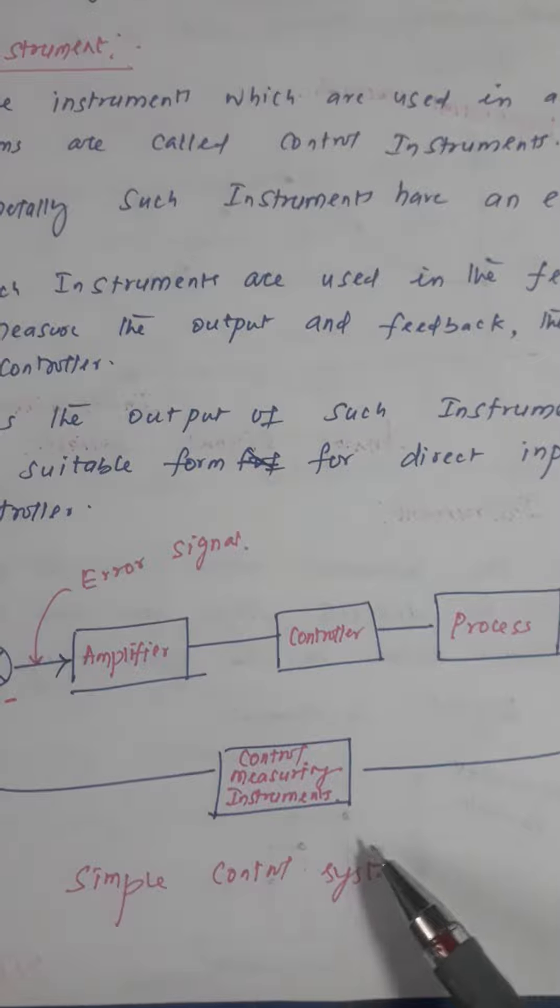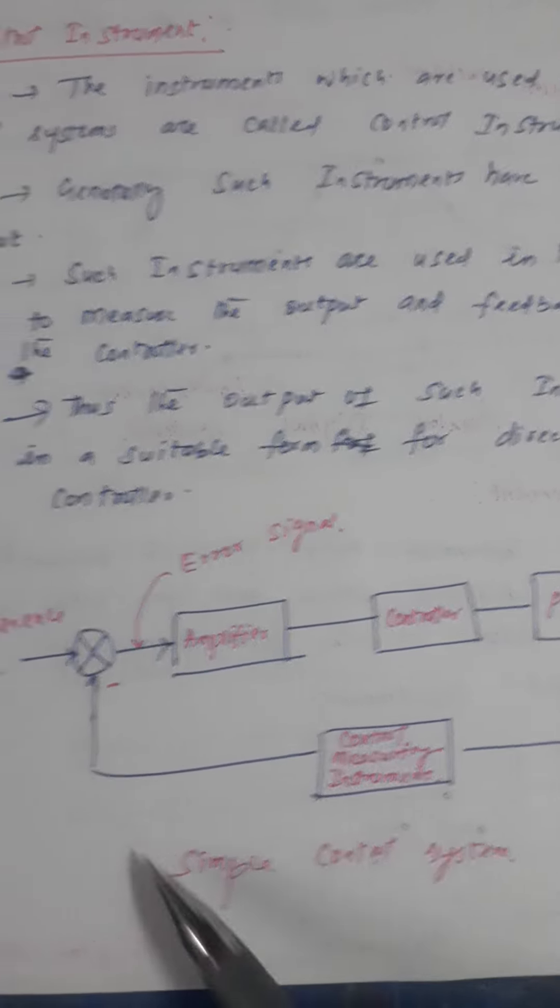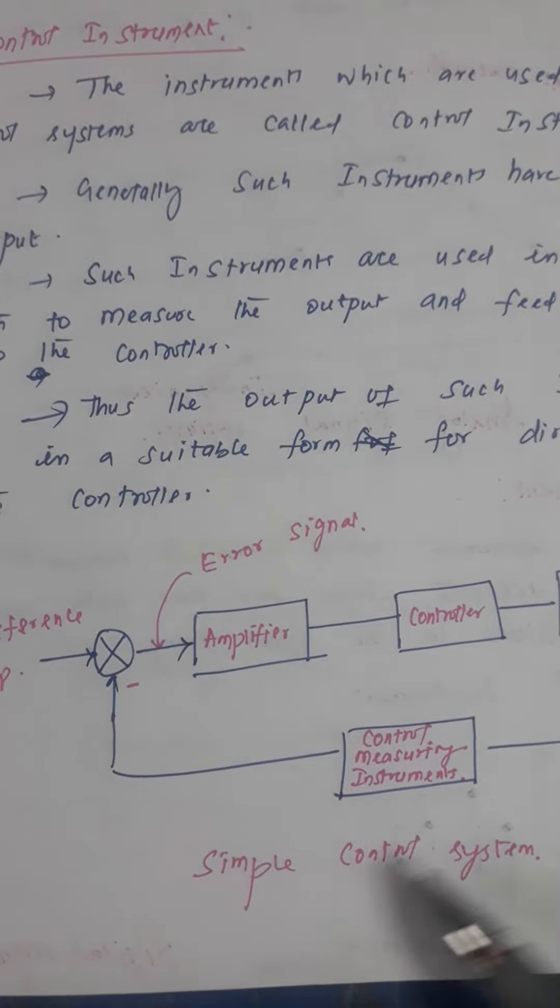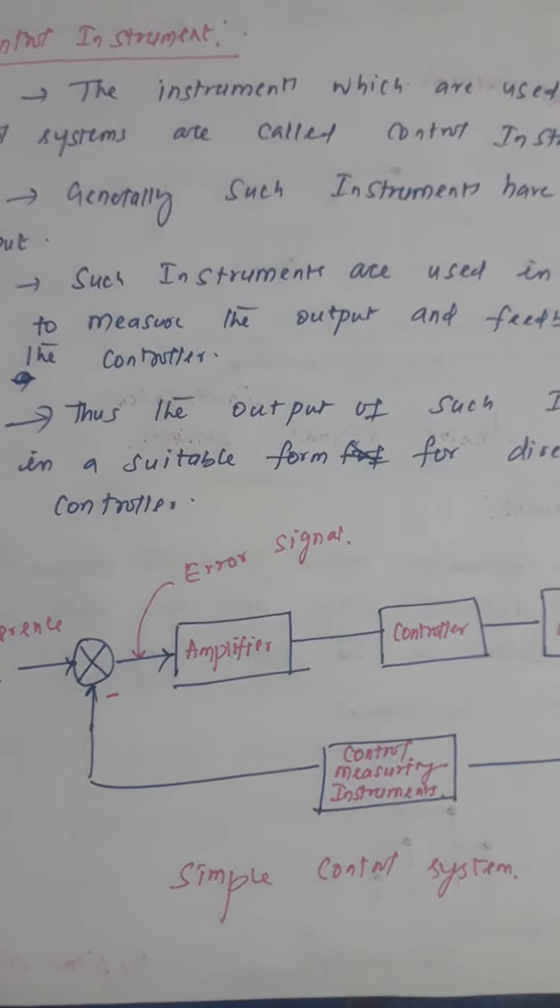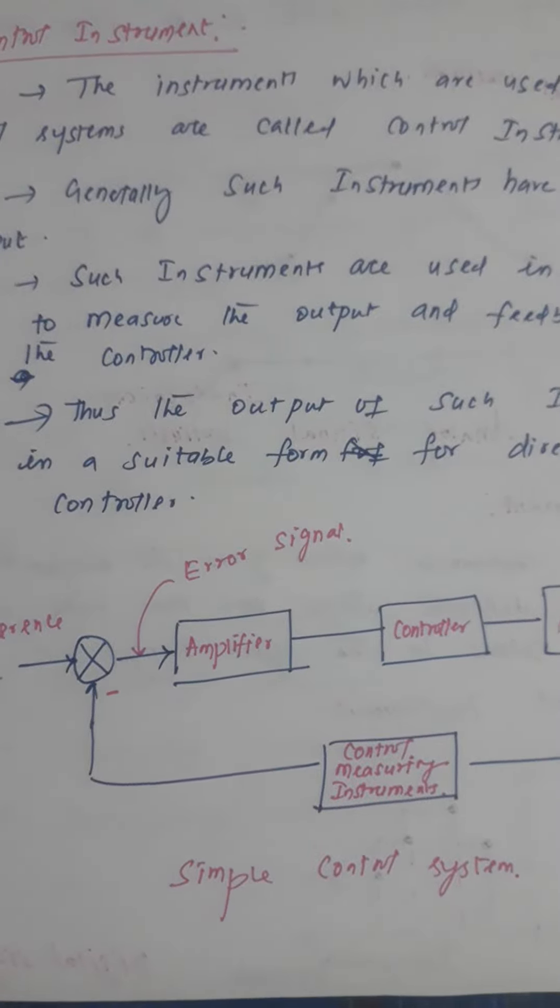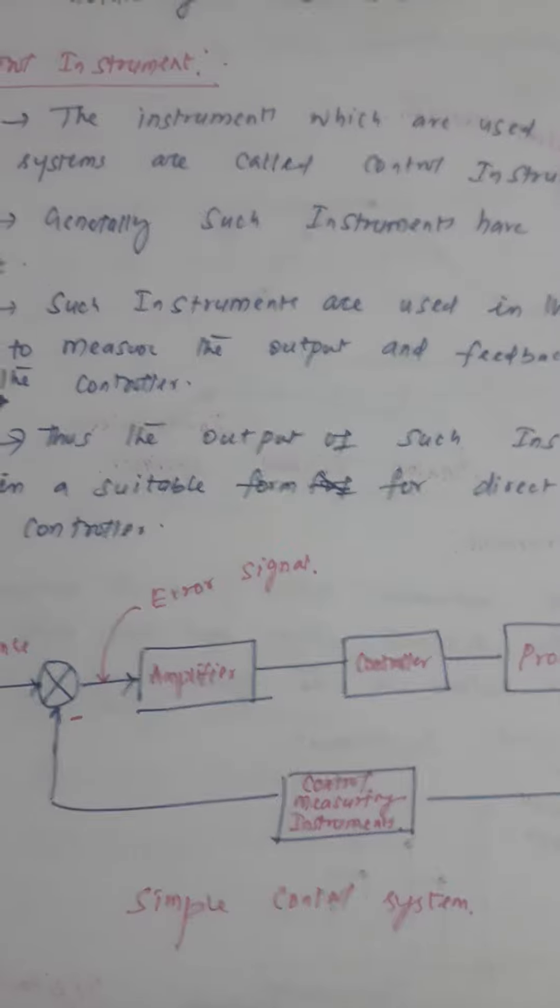This is your feedback. This is an error signal which is produced by this particular process and it is fed back to your input. This is automatically controlled. How? For example, if you're going to take a temperature controller.